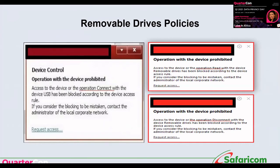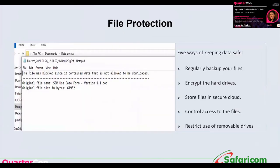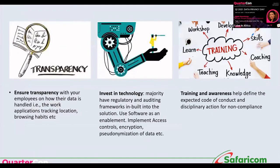Other policies you can put in place include controls for removable drives, especially with people working from home, so that when employees get a prompt they are aware they are being monitored. File protection policies define how sensitive files are protected — who you share those files with, and ensuring unauthorized recipients cannot open them.